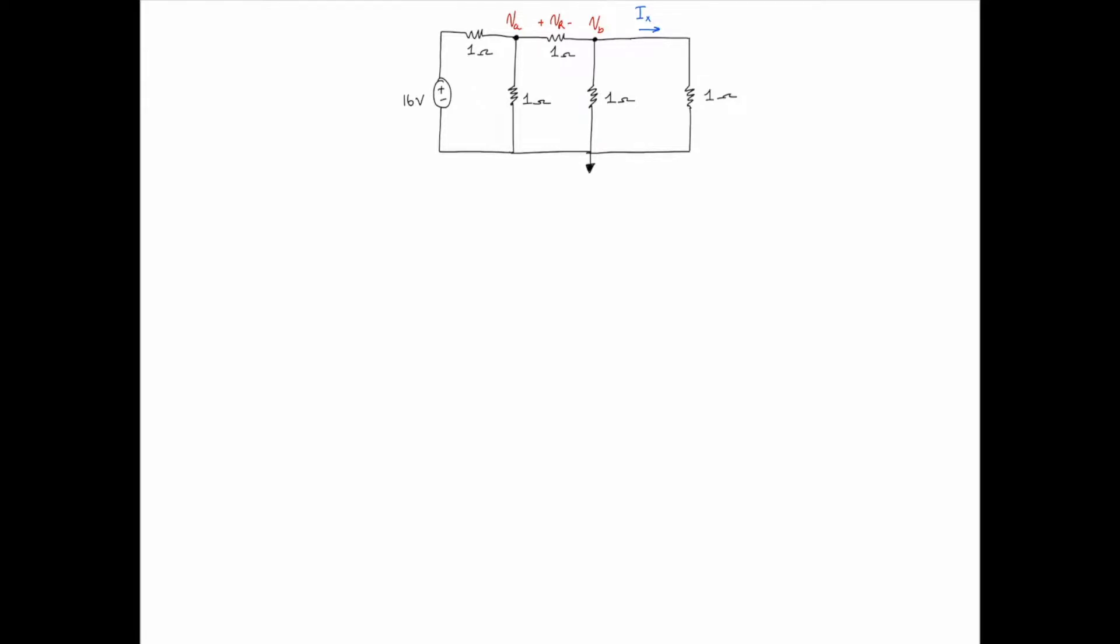As always we have VA and VB which are the two terminals we're going to apply KCL at. Applying KCL at node VA gives the equation: (VA - 16V)/1Ω + (VA - 0V)/1Ω + (VA - VB)/1Ω = 0.